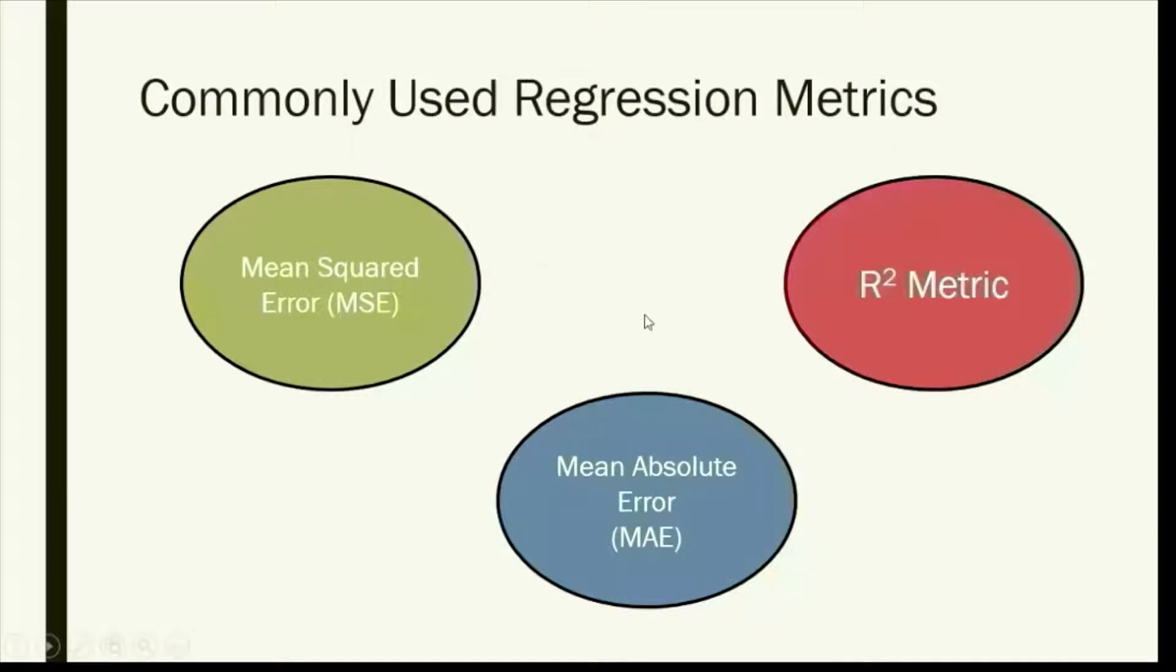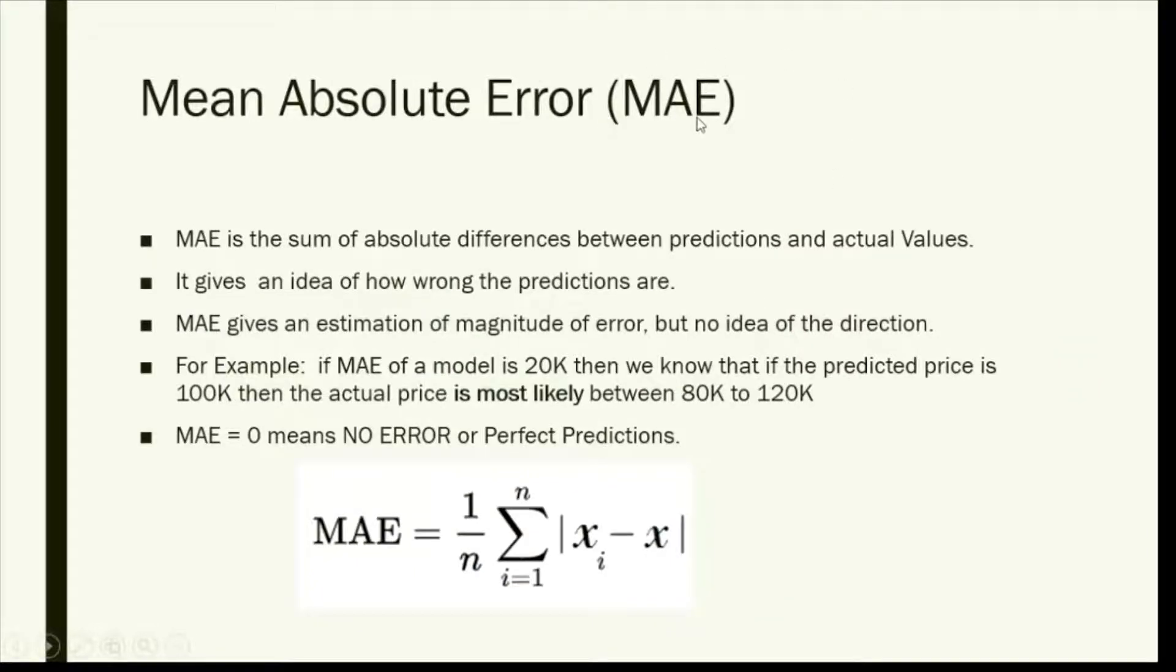Let's come to the metrics. We commonly use regression metrics: Mean Squared Error, Mean Absolute Error, and R-squared metric. First we come to Mean Absolute Error. This is the sum of absolute differences between predicted and actual values.